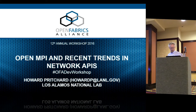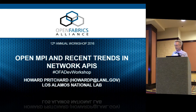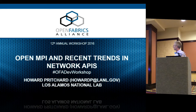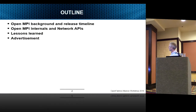I'm going to take a different tack from Ken's talk because I wanted to focus more on how some of these network APIs that we've been talking about impact what we're doing in OpenMPI now. I got somehow volunteered into being a release manager for version 2 of OpenMPI, the release stream 2, along with Jeff Squires. I'll talk about the MPI release cycle background, then dive into OpenMPI internals focusing on how they interoperate with various network APIs, and then get into a little controversy about lessons learned, and if we have time, a brief advertisement.